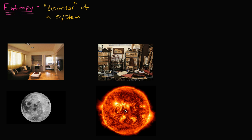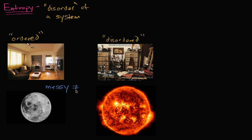So when you look at these rooms, you might say this room over here looks ordered — it's a clean room — and this over here looks disordered, it's a messy room. If all you had is this definition, you'd say maybe this one is more disordered, maybe this one has more entropy. And you wouldn't be alone in thinking that. In fact, even in a lot of textbooks they'll use this analogy of a clean room versus a messy room. But this isn't exactly the case — messy does not equal entropy.